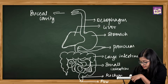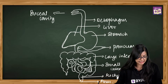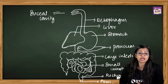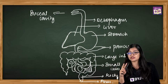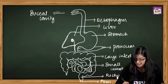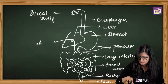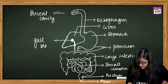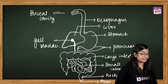Label the buccal cavity, esophagus, stomach, liver, pancreas, large intestine, small intestine, rectum, and anus. I also forgot one structure - the gallbladder, so make sure you label that too. Diagrams need not look exactly like the textbook - all it needs is accurate content and proper labellings.